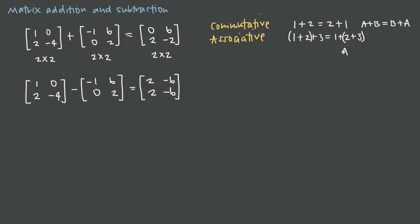If I'm adding A plus B plus C — three different matrices — I can do that addition in different ways. I can first add A and B and then add matrix C to that result, or I can add B and C first and then add matrix A, and I'll still get the same result either way. So that's the associative property, and both the commutative and associative properties apply to matrix addition.